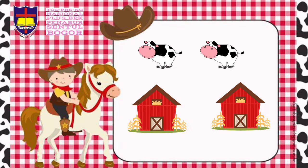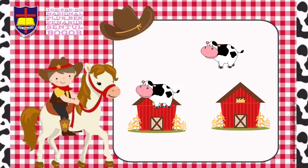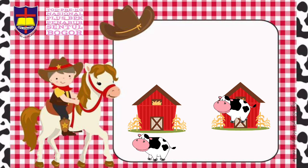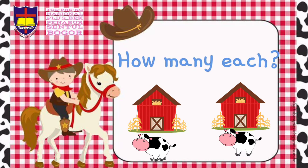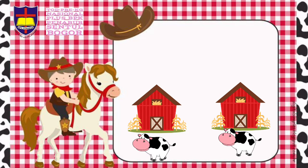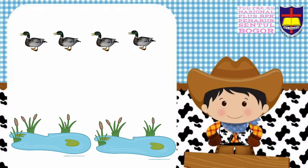Today we will continue to learn math. Are you ready? Good job! Let's see the example. There are two cows and two barns. Let's share two cows between two barns. Put one cow in the first barn and one cow in the second one. How many cows in each barn? Great — there is one cow in each barn!